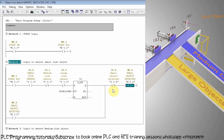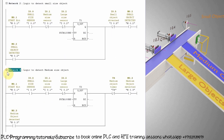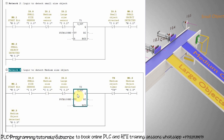In network three we have written the logic to detect medium size objects. Here we have used the normal open contacts of I0.0 and I0.1 sensors in series with the normal close contact of I0.2 large size sensor. This means that if a medium size object comes in front of these sensors, the lower two sensors I0.0 and I0.1 will detect it, turning on the 100 millisecond timer T2, which will then latch on M0.3 to indicate detection of the medium size object.